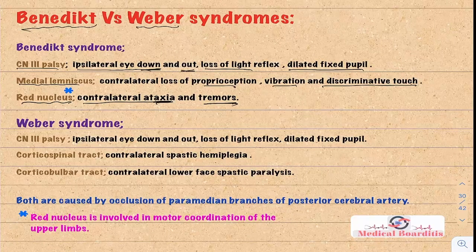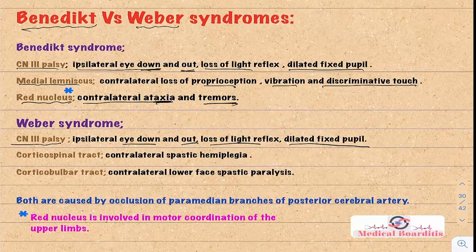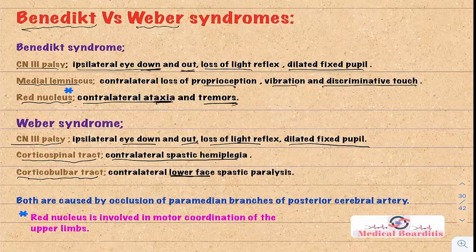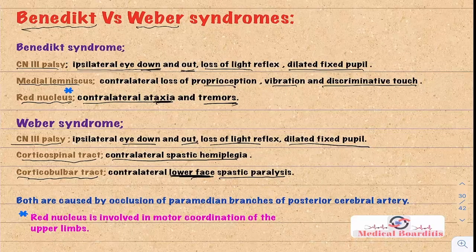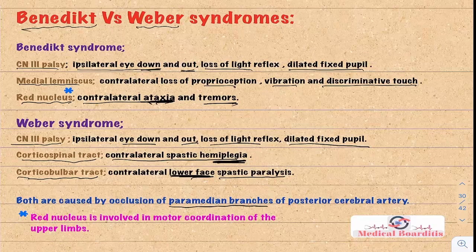Weber syndrome also includes cranial nerve 3 palsy — ipsilateral eye down and out, fixed dilated pupil, loss of light reflex — but here the corticospinal tract is involved, causing contralateral spastic hemiplegia, and corticobulbar tract involvement causes contralateral lower face spastic paralysis (upper face is spared due to bilateral cortical innervation). The key difference: Benedict syndrome features more ataxia, Weber syndrome features more hemiplegia. Both syndromes are caused by occlusion of the paramedian branches of the posterior cerebral artery.